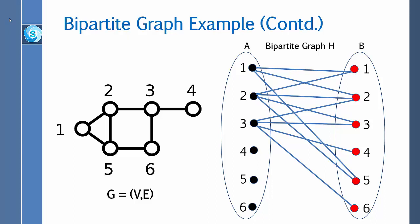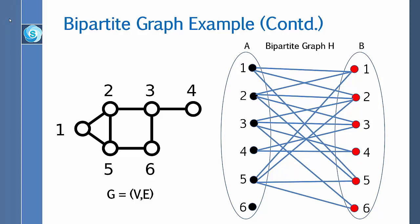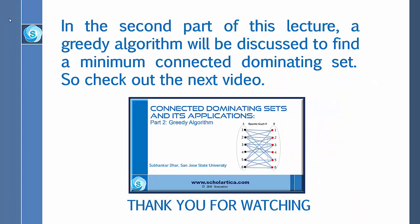Vertex 4 is adjacent to 4. Vertex 5 is adjacent to 1, 2, 5, and 6. Vertex 6 is adjacent to 3, 5, and 6. This is how we construct the bipartite graph H. In the second part of this lecture a greedy algorithm will be discussed to find a minimum connected dominating set. Please check out the next video, and thanks for watching.